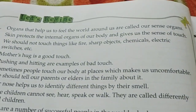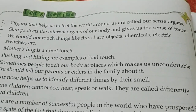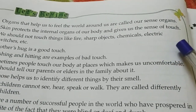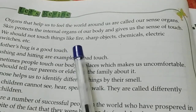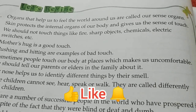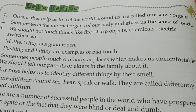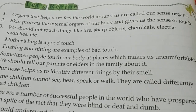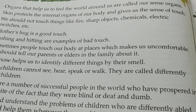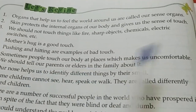To summarize the chapter: organs that help us feel the world around us are called sense organs. Skin protects our internal organs and gives us the sense of touch. We should not touch dangerous things like fire, electrical switches, sharp objects, or chemicals. A mother's hug is an example of a good touch, while pushing and hitting are examples of bad touch. If someone touches our body in a way that makes us uncomfortable, we should tell our parents or elders.